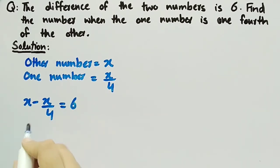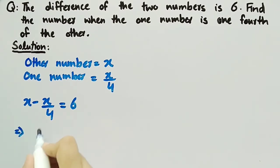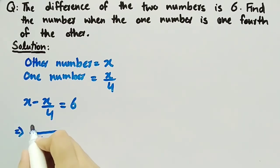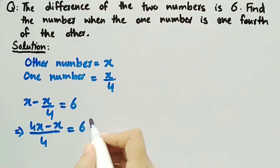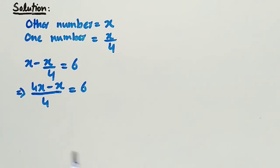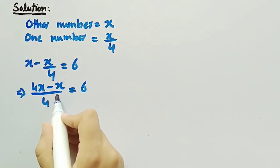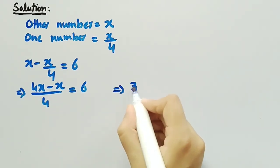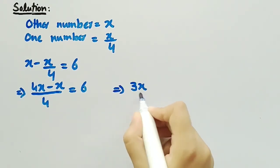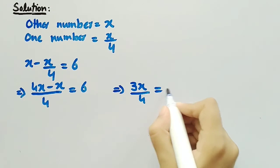Now we will solve it by taking the LCM, that is equal to 4. So we get 4x minus x equal to 6, and we are left with 3x divided by 4 equal to 6.